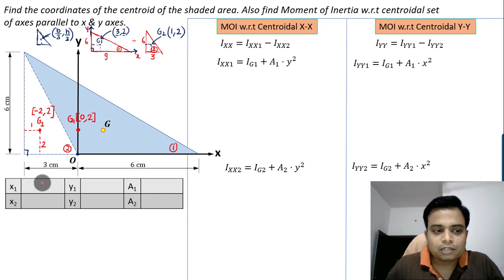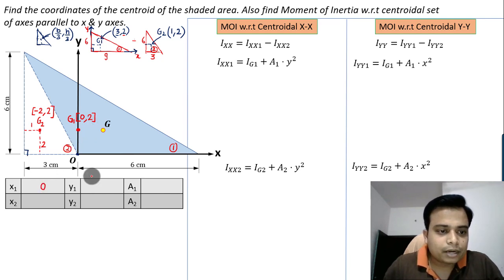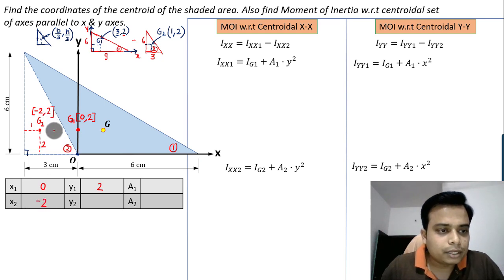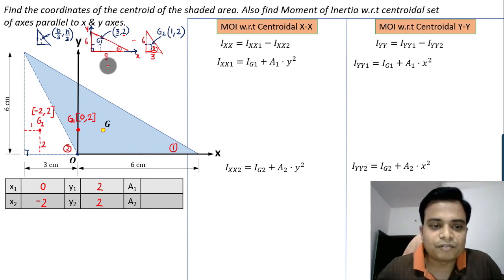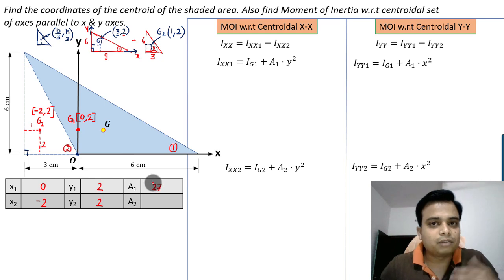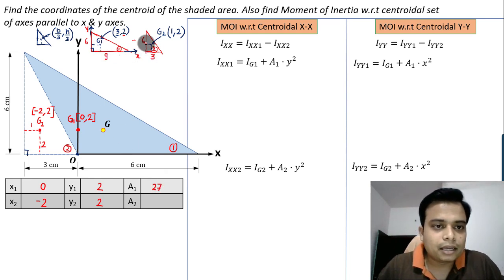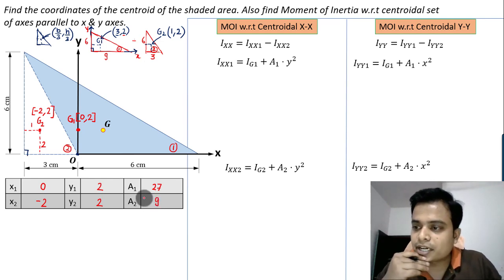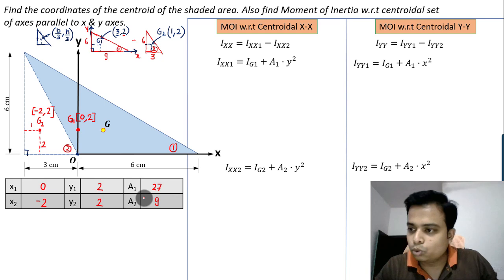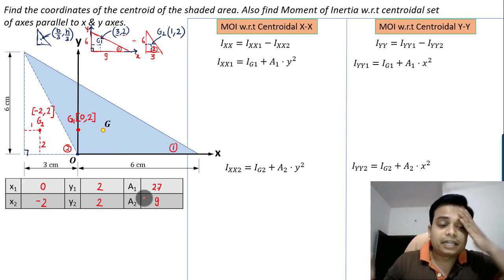Let me put up all these values: x1 is zero, y1 is two, x2 is minus two, y2 is two. Area one is half of base into height — six into nine is 54, divided by two is 27 centimeter square. Area two is six into three equals 18, divided by two is nine. Values confirmed: zero, minus two, two, two, and 27 and nine. We are going in the right direction.